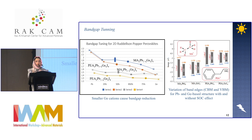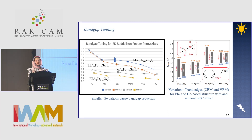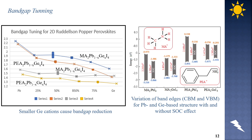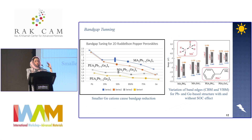This is a comparative view of band gap for all these permutations. When lead is replaced with germanium, a substantial replacement results in a gradual decrease in the band gap. In the case of methylammonium, the band gap reduction is smaller, but when the larger spacer cation — phenylethylammonium — is used, the band gap is further reduced. This difference can be observed from the energy level diagram, where the valence band and conduction band edges are slightly shifted upward.